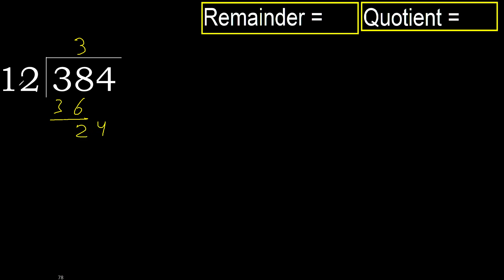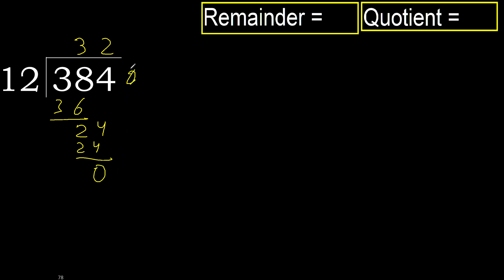24. 12 multiply by 2 is 24 — is not greater. Subtract: 24 minus 24 is 0. Next — there is no next number, therefore finish it.